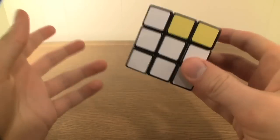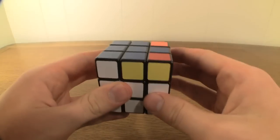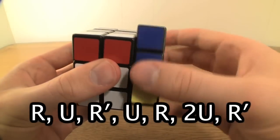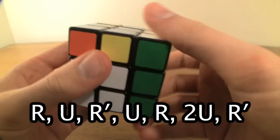If you can't get two edges to line up by just twisting the up face around, with the blue cross on top, perform the algorithm R, U, R', U, R, 2U, R'.